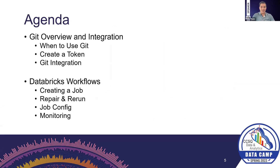Hopefully we are familiar faces by now. In this session, I'm going to be going over GitHub, providing an overview of that and how it integrates into Databricks. I'll first provide an overview of what GitHub is, when it would be relevant to use it in your Databricks workflows, how to create a GitHub token, and finally integrating GitHub into Databricks and leveraging all the features for your Git flows to create branches, pull requests, merging them and updating them within the platform. Arif is going to close us out by going over Databricks workflows — specifically how to create a job, repairing and rerunning it, as well as job configurations and monitoring.